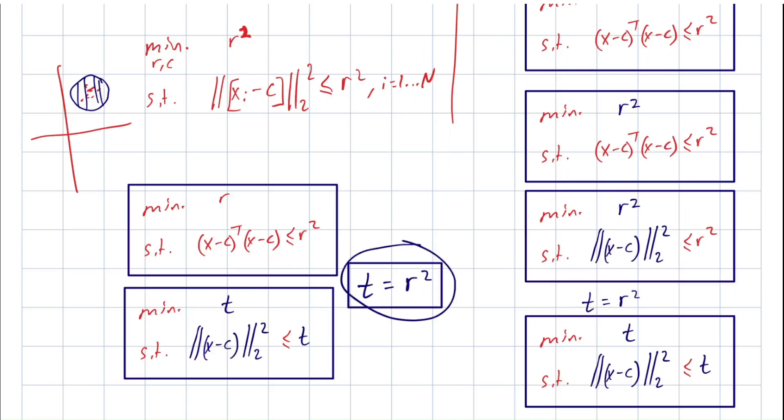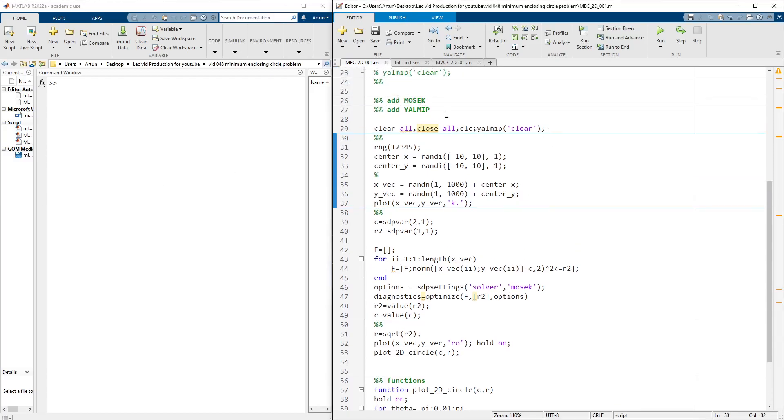This is the change of variable for it. Let's go to MATLAB and see for ourselves how we can solve that by using YALMIP and Mosek. Let's clear the memory, generate some random numbers center x and center y. We're looking at two-dimensional space and we're generating a bunch of cluster points, shifting by using center x and center y.